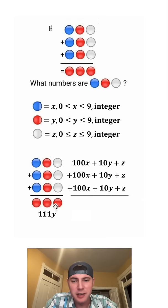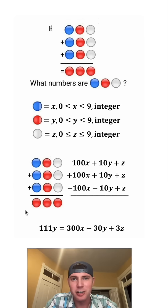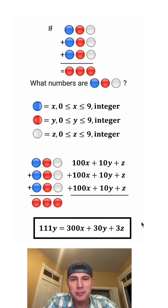After we add these three up, it's going to be the same thing as these three red dots. 100x plus 100x plus 100x is 300x. 10y plus 10y plus 10y is 30y. And z plus z plus z is 3z. So both of these are equal to the three red dots, so we know that they're going to be equal to each other. And this looks important. Let's put a box around it.